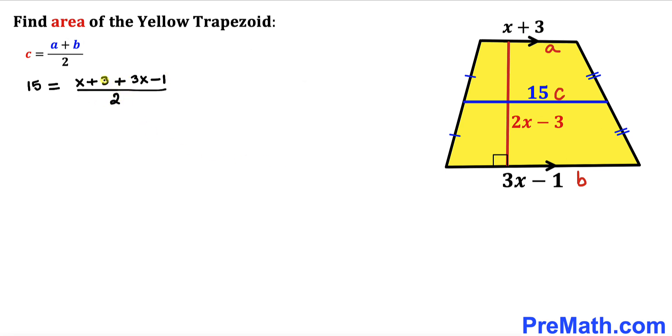Now let's go ahead and combine the like terms on the right hand side. So on the left hand side we got 15 equals to we got 4x plus 2 all over 2.